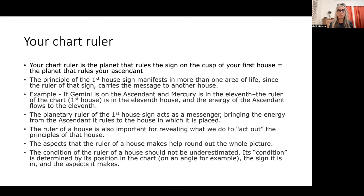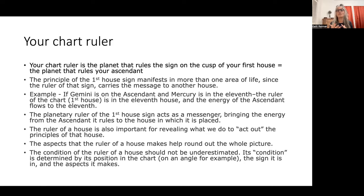Your chart ruler is the planet that rules the sign on the cusp of your first house — it's that simple. If you have Aries on your first house, your chart ruler is Mars. Taurus — Venus. Gemini — Mercury. Cancer — Moon. Leo — Sun. Virgo — Mercury. Libra — Venus. Scorpio — Pluto. Sagittarius — Jupiter. Capricorn — Saturn. Aquarius — Uranus. And Pisces — Neptune.